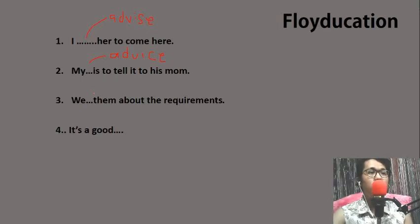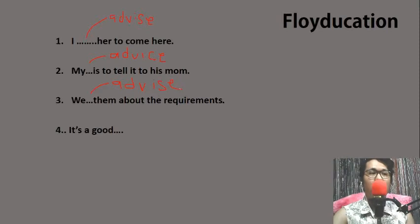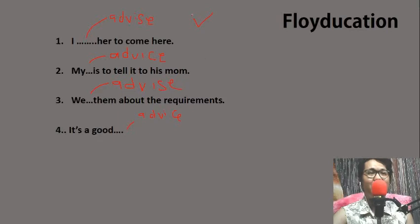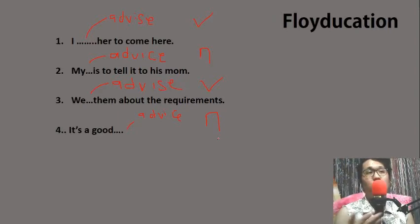If you know what a noun is and you know what a verb is, you will never go wrong. Number three: 'We blank them about the requirements.' We're going to use a verb: 'We advise.' And the last one: 'It's a good blank.' — 'It's a good advice.' That is a noun. So to recap: number one, 'advise' — verb; number two, 'my advice' — noun; number three, 'advise' — verb; number four, 'it's a good advice' — noun. That's all about advice and advise.